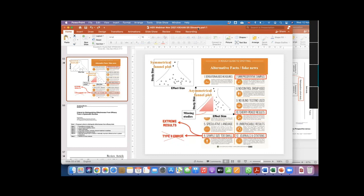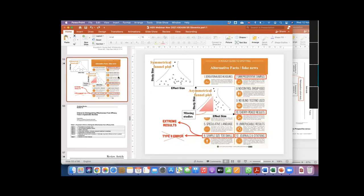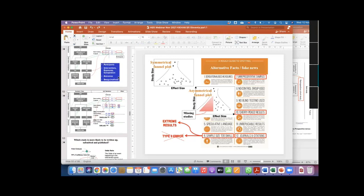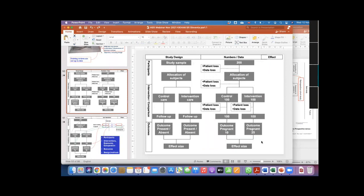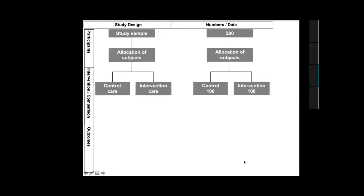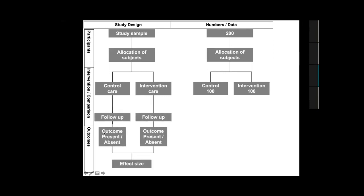This is what I would like to cover in this session. The first thing you need to understand is how are the results calculated after a study is completed. We take the example of a standard trial where the sample is first allocated to intervention or control, and then people are followed up to see whether they have the outcome or they don't, and from this information an effect size is calculated.